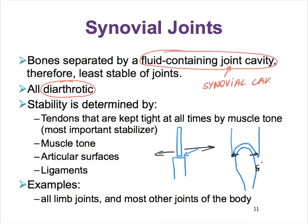So this is more stable, and the flat-surface joint is less stable. They're both synovial joints, but their articular surfaces differ, and therefore that impacts how stable they are.